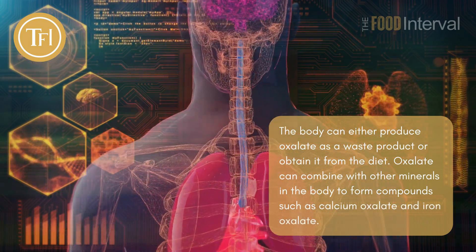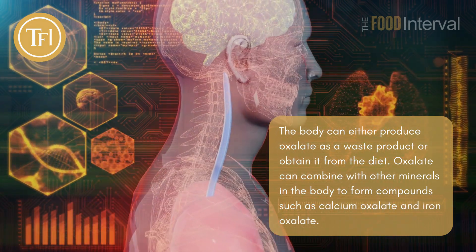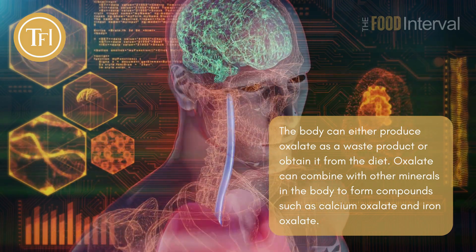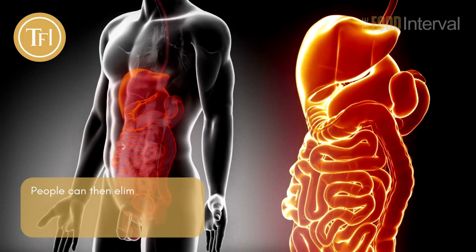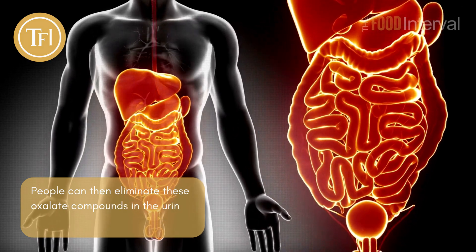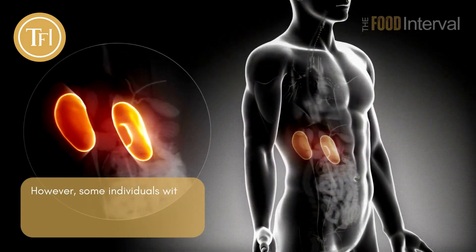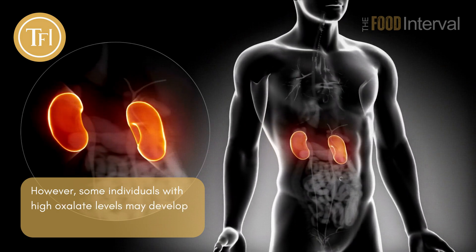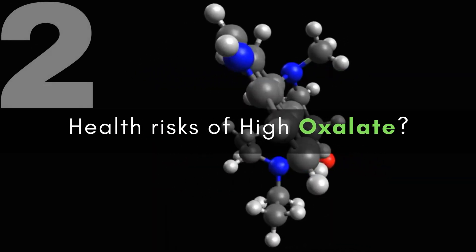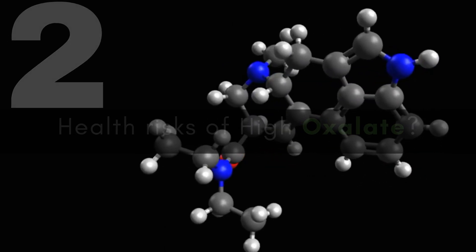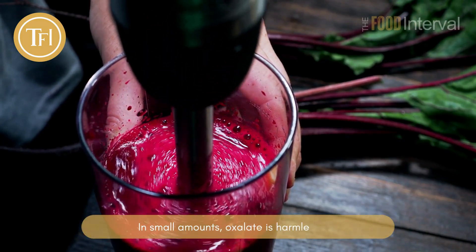The body can either produce oxalate as a waste product or obtain it from the diet. Oxalate can combine with other minerals in the body to form compounds such as calcium oxalate and iron oxalate. People can then eliminate these oxalate compounds in the urine or stool. However, some individuals with high oxalate levels may develop kidney stones.